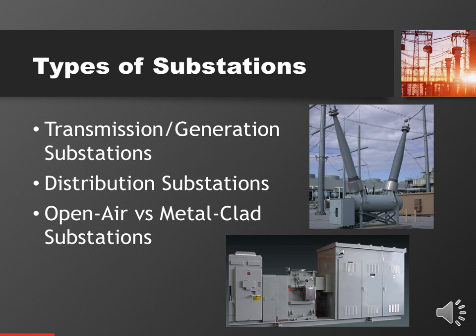In terms of generation substations, generators usually generate power at around 22,000 volts, and immediately outside in the substation they step it up to something much higher — in this case 500,000 volts — and transmit it over great distances, then reverse the process at the other end. Transmission and generation substations are at the top of the food chain with probably the highest quality equipment, but for this presentation we won't spend much time there.